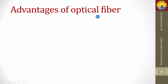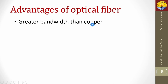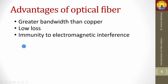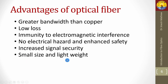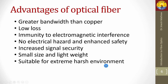Advantages of optical fiber: it has greater bandwidth than copper, low loss, immunity to electromagnetic interference, no electrical hazard and enhanced safety, increased signal security, small size and light weight, and is suitable for extreme harsh environments. Compared to copper coaxial cable or copper wire, the data carrying capacity of optical fiber is much higher. The loss of optical fiber is 0.2 dB per kilometer for standard single mode fiber — very small compared to any other waveguide.